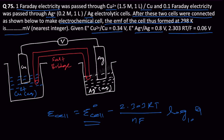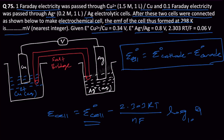Now E°_cell standard is the standard reduction potential of the cathode minus the standard reduction potential of the anode. This problem has two layers. First, we need to figure out the new concentrations, because the concentrations of Cu²⁺ and Ag⁺ given are initial concentrations. Once electricity is passed, those concentrations are going to change, so we need to figure that out first before applying the Nernst equation.